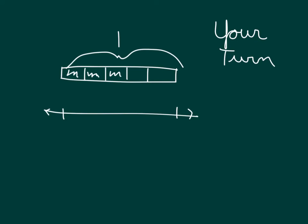Okay, it's your turn. Can you go ahead and complete the number line to indicate the fraction shown by this tape diagram? Pause the video while you do your work. We are again between 0 and 1, and in this case we have 5 parts, so we are talking about fifths: 1 fifth, 2 fifths, 3 fifths, 4 fifths. And we will circle 3 fifths.